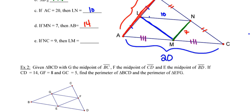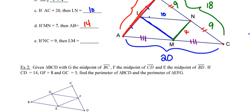In the last part, the distance between points N and C is 9, and we want to find the length of LM. LM is the mid-segment for side BC. Since NC is 9 and N is the mid-point of BC, the full length of BC is 18. Because LM is the mid-segment for that side of length 18, its length is going to be half of 18, which is 9.